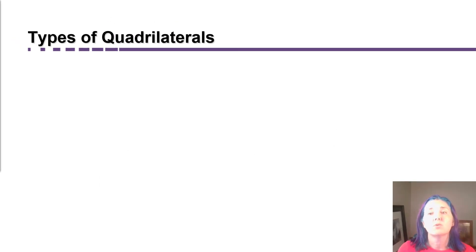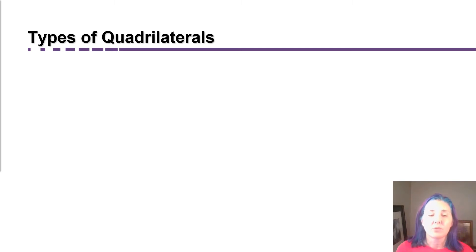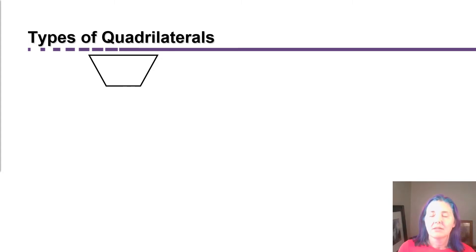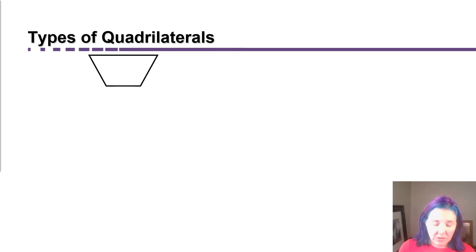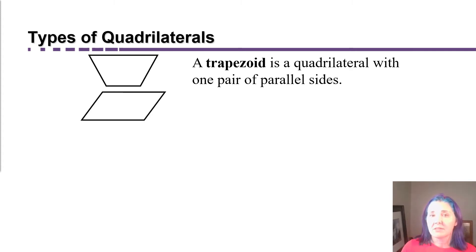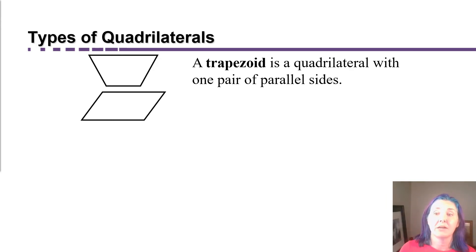Now we're going to categorize quadrilaterals. Quadrilaterals — quad means four — are four-sided polygons. If you specify that a quadrilateral has the extra characteristic, besides just having four sides, of having one pair of those sides parallel to each other, then that's what's known as a trapezoid. If you further specify that not just one pair of sides is parallel, but two pairs, then you have a parallelogram.